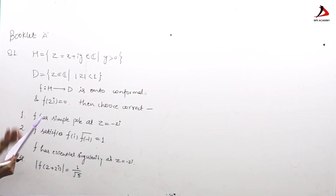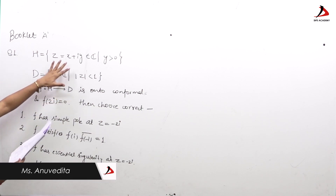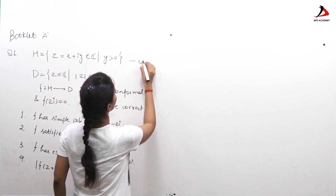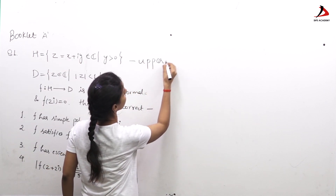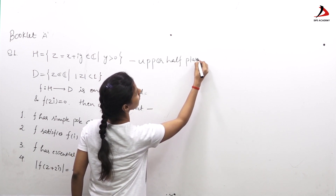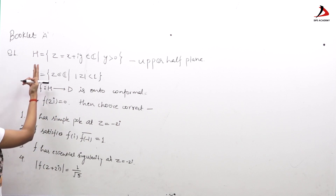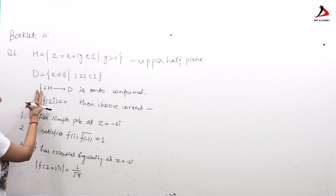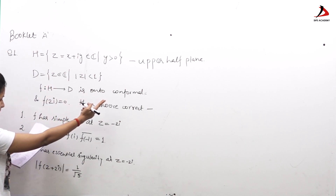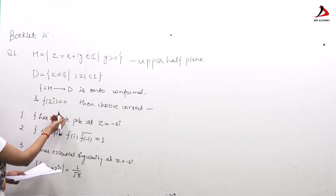Question number 81 from Booklet A. H denotes the upper half plane and D is the unit disk. f is a map from H to D — onto conformal — and it is a Möbius transformation. They have given f(2i) = 0, and we have to choose which option is correct.